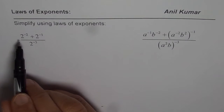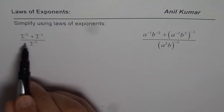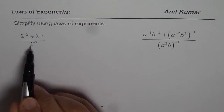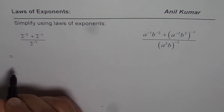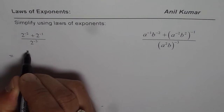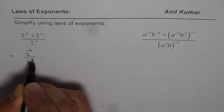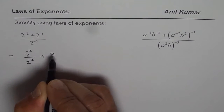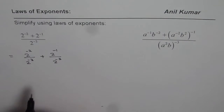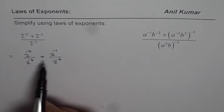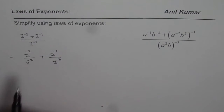The first expression is 2 to the power of minus 2 plus 2 to the power of minus 1, both divided by 2 to the power of minus 3. We can rewrite this as 2 to the power of minus 2 divided by 2 to the power of minus 3, plus 2 to the power of minus 1 divided by 2 to the power of minus 3. We write it in this fashion to avoid multilayer fractions.